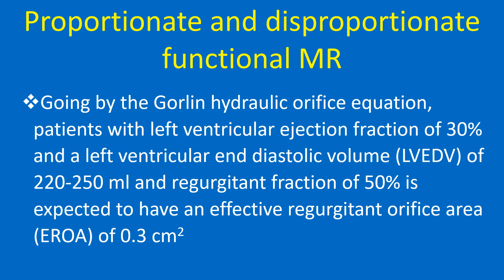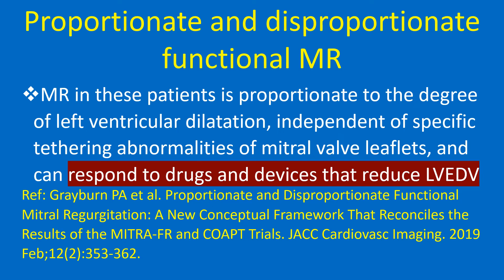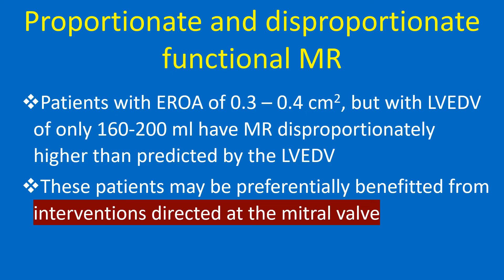Moving on to proportionate and disproportionate functional MR. Going by the Gorlin hydraulic orifice equation, patients with a left ventricular ejection fraction of 30% and a left ventricular end-diastolic volume of 220 to 250 ml and regurgitant fraction of 50% are expected to have an effective regurgitant orifice area of 0.3 square centimeters. MR in these patients is proportionate to the degree of left ventricular dilatation, independent of specific tethering abnormalities of mitral valve leaflets, and can respond to drugs and devices that reduce LVEDV.